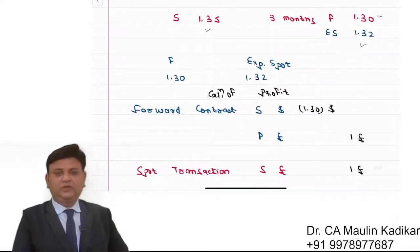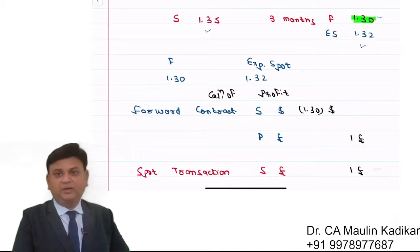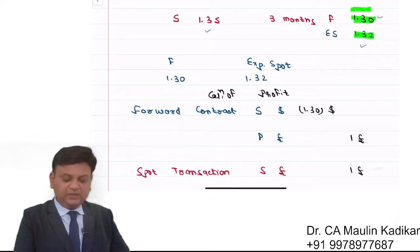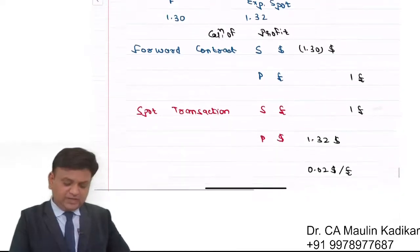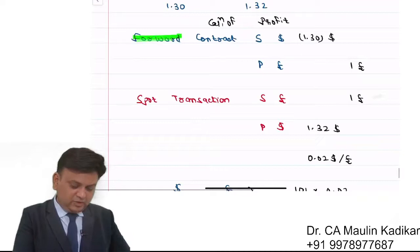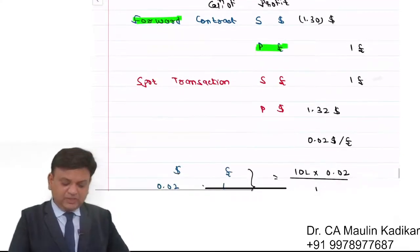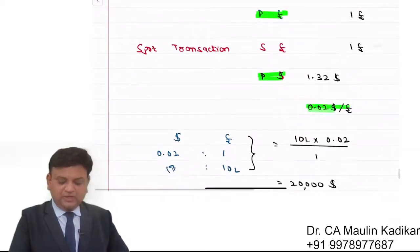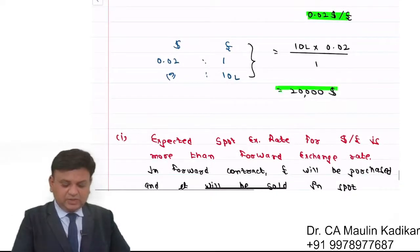Summarizing the entire answer: In the first part, since we expect the exchange rate to be $1.32 but can get a forward rate of $1.30, we enter into a forward contract to purchase UK pounds and sell them in the spot market, achieving a speculative gain of $20,000 USD. In the second part, if the spot exchange rate turns out to be $1.26, we are buying UK pounds at $1.30 but can only sell at $1.26, resulting in a loss.